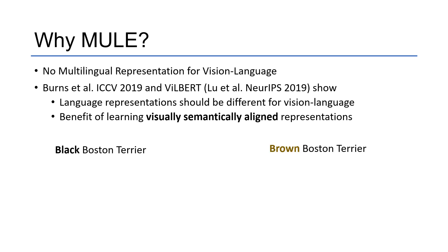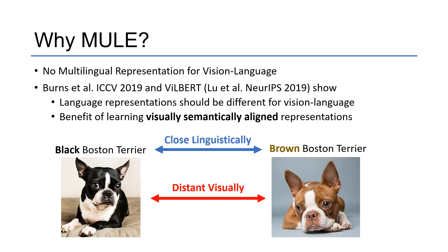To illustrate why this is important, let's consider two phrases: Black Boston Terrier and Brown Boston Terrier. When training on only text, the representations for these two phrases will be close because they're used in similar linguistic contexts. However, if we look at the photos, we see that they're distinct visually because one is black and the other is brown, and therefore their representations should not be close.